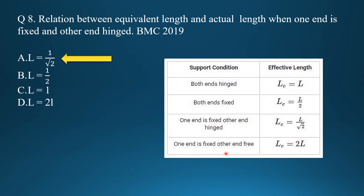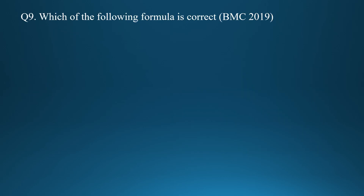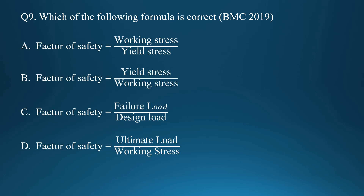The remaining condition: one end fixed and another end free — effective length equals twice the actual length. For question eight, the formula for factor of safety is yield stress divided by working stress. Option B is correct.